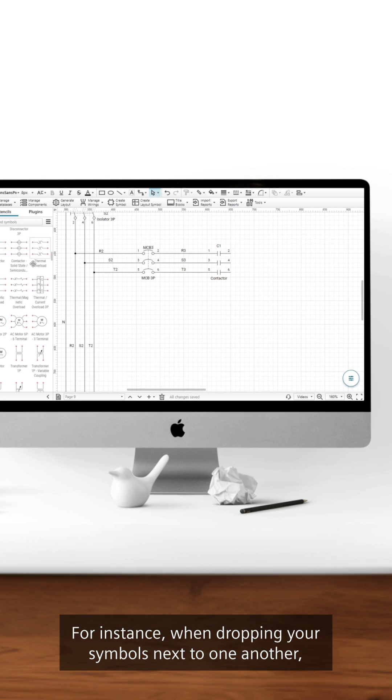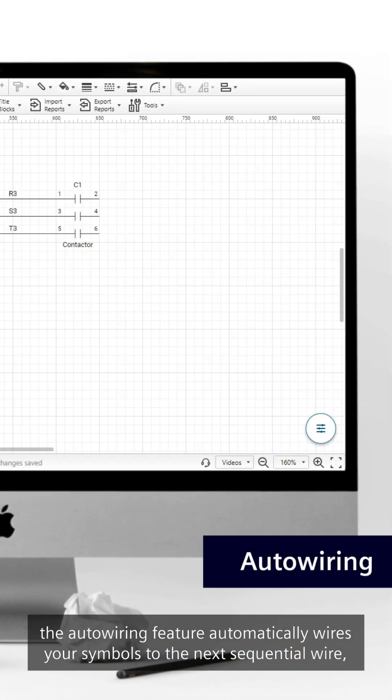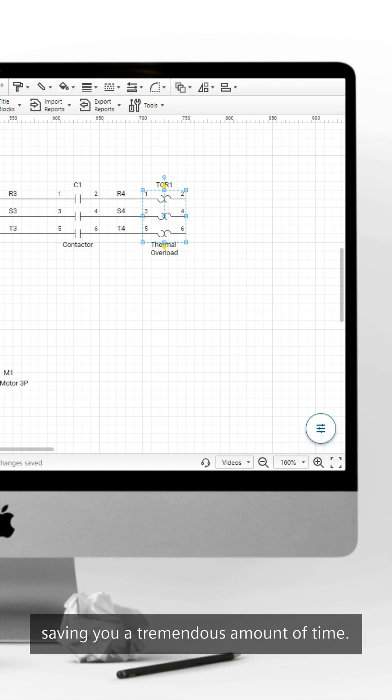For instance, when dropping your symbols next to one another, the auto-wiring feature automatically wires your symbols to the next sequential wire, saving you a tremendous amount of time.